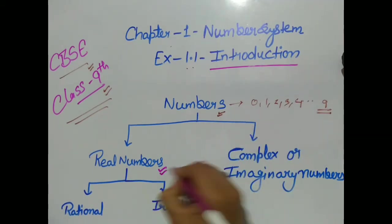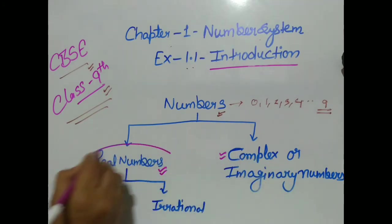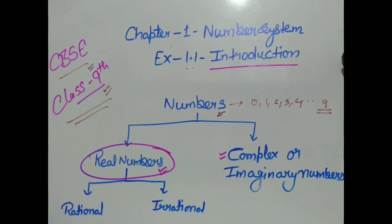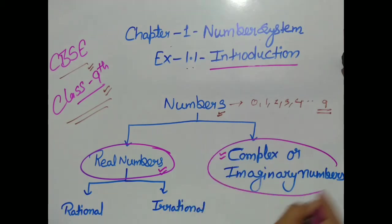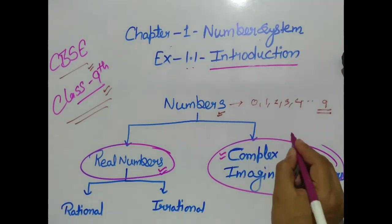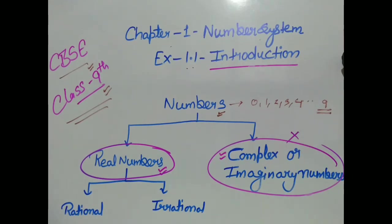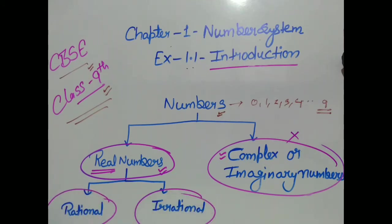Introduction — step by step we can understand. Numbers can be divided into two parts: one is complex numbers, and one is real numbers. Real numbers further have two parts: one is rational numbers and one is irrational numbers. We will study rational numbers and irrational numbers one by one.